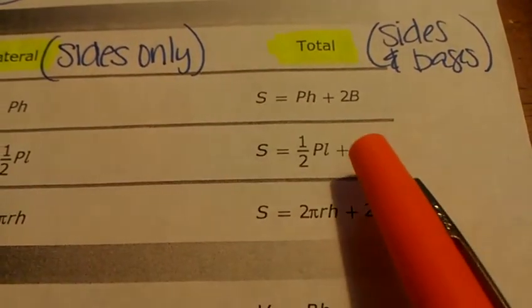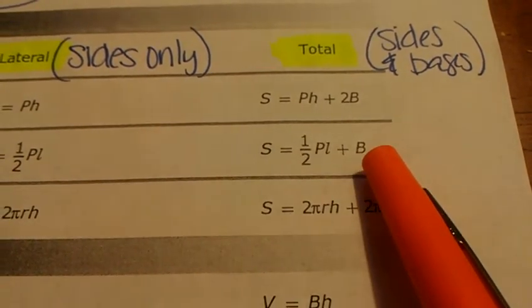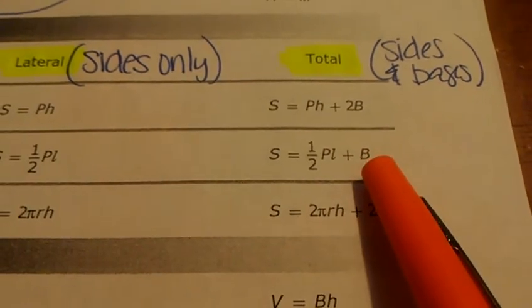Why isn't there a 2 in this formula like there is the other one? Because a pyramid only has one base. So there's no need to multiply it by 2. I don't have two bases. I just have one for pyramids.